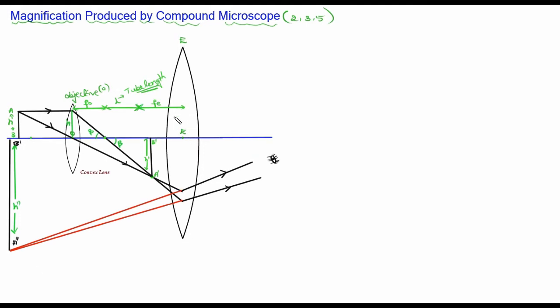From the eyepiece, by adjustment we can make the final image fall on the near point or at the far point. Imagine if this is the near point — the image is formed here and this distance is represented by D. We have to calculate what the magnification produced will be.